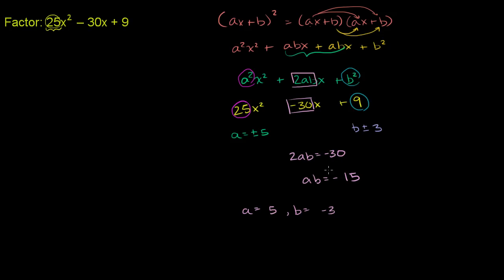Those would work out to ab being equal to negative 15. Or we could make a is equal to negative 5, and b is equal to positive 3. So either of these will work.